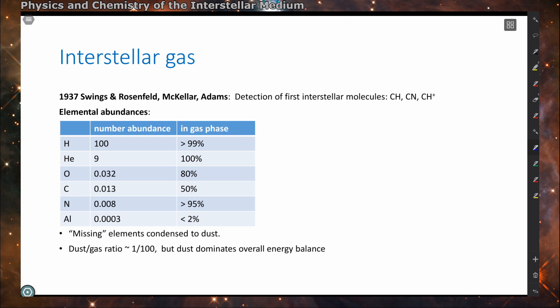Then somewhat later, not only atomic absorption has been observed, but also molecules. In the optical, CH, CN, and CH+ were first detected in 1937. These were the first interstellar molecules observed. This was a big surprise because it was commonly assumed that the conditions in the interstellar medium are such that it is very difficult for molecules to survive. Only atomic species were expected.